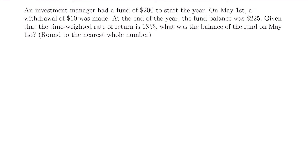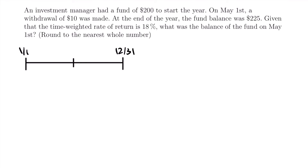To figure out how to calculate that balance, we set up a timeline. We have a beginning and an end for the initial balance and the final balance, and the only date in between is May 1st. So we have three dates: January 1st, May 1st, and December 31st. We draw a timeline with two endpoints and one date in between, labeled 1-1, 5-1, and 12-31.